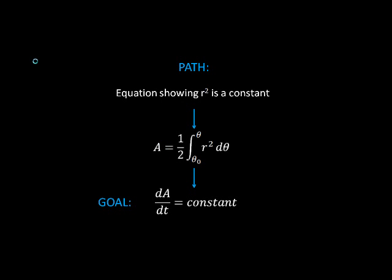So how are we going to get there? We know that area is the integral of one-half r squared dθ, so we must show somehow that r squared dθ is a constant. So we need an expression for r squared.